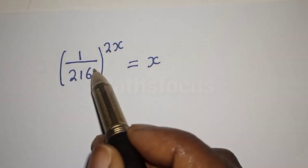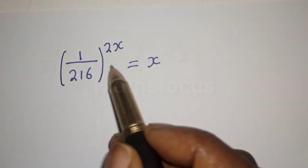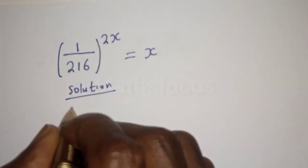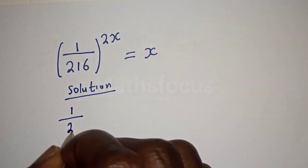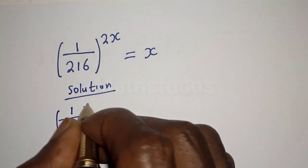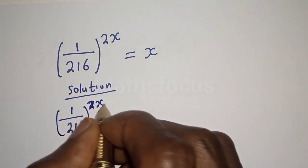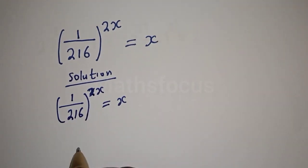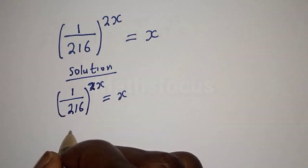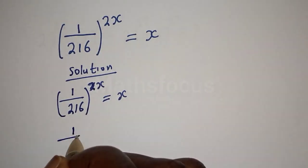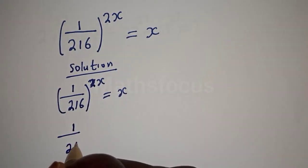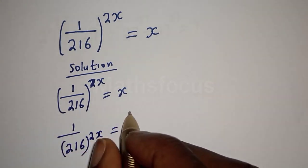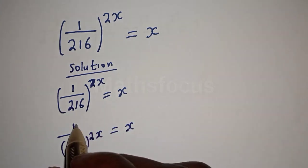We want to find the value of x from this math problem. We have 1 over 216 raised to the power 2x is equal to x, because 1 raised to the power 2x is the same thing as 1.